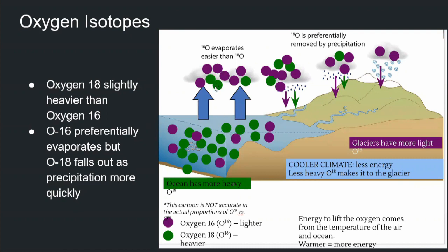So if you evaporate some water from the ocean, it will preferentially contain O16 rather than O18. You carry that, you push your cloud onto the land, it starts raining, and because O18 is heavier than O16, O18 is going to be the atom that preferentially gets removed by the precipitation.